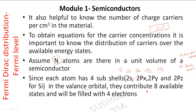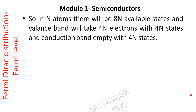For N atoms, there are 4N states in the conduction band — which is completely empty in an intrinsic semiconductor — and 4N electrons fill the 4N valence band states. So there are 8N total available states: the valence band takes 4N electrons with 4N states, and the conduction band is empty with its 4N states.